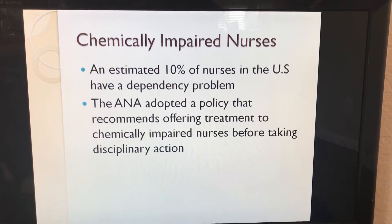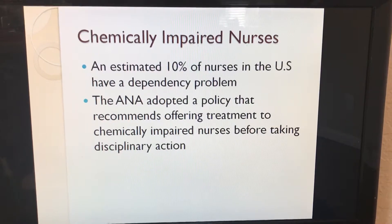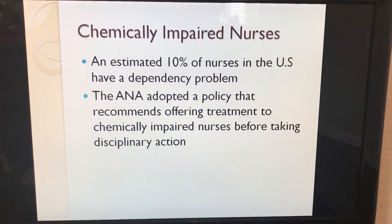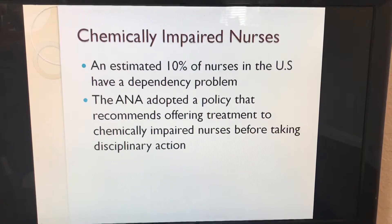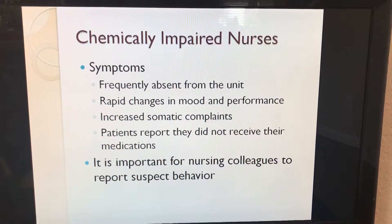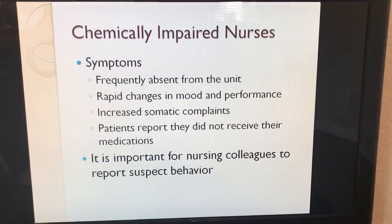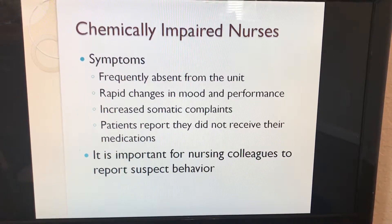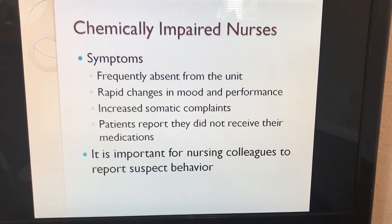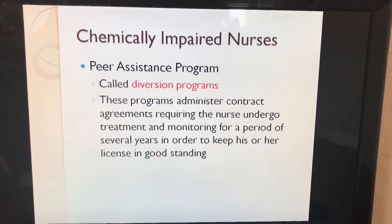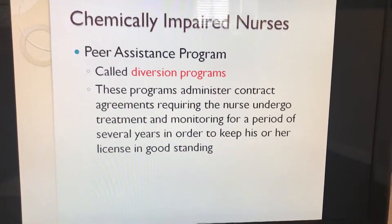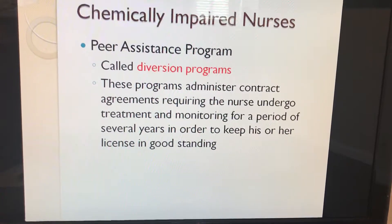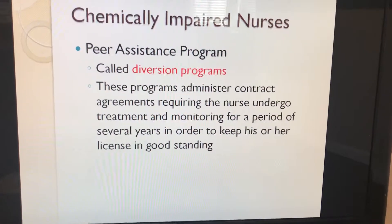It is estimated that 10% of nurses in the U.S. have a dependency problem. The ANA adopted a policy recommending treatment for chemically impaired nurses before disciplinary action. Symptoms to look for include being frequently absent from the unit, rapid changes in mood and performance, increased somatic complaints, and patients reporting they did not receive their medications. It is important for nursing colleagues to report suspected behavior. The peer assistance program (also called diversion programs) administers contract agreements requiring the nurse to undergo treatment and monitoring for several years in order to keep their license in good standing.